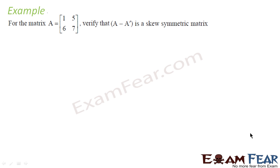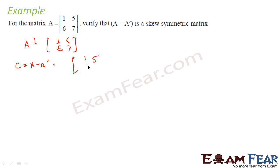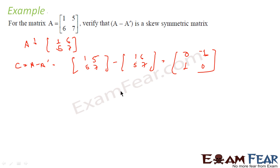We will take one more example — a simple example. We have to find whether A minus A dash is a skew-symmetric matrix. We find A dash first by replacing rows with columns, so [1, 5; 6, 7] becomes [1, 6; 5, 7]. Let C be A minus A dash, so C equals [1, 5; 6, 7] minus [1, 6; 5, 7], giving [0, -1; 1, 0]. For a skew-symmetric matrix: it is square — yes; diagonal elements are 0 — yes; elements are mirrored negatives — yes. So it is a skew-symmetric matrix.